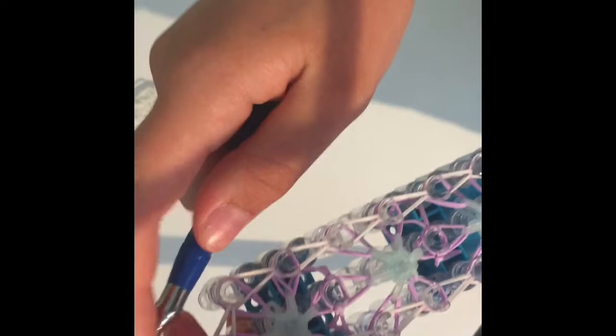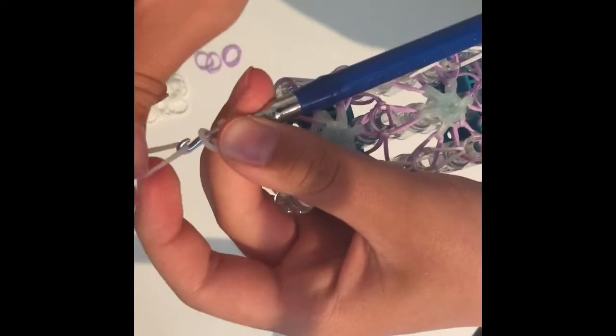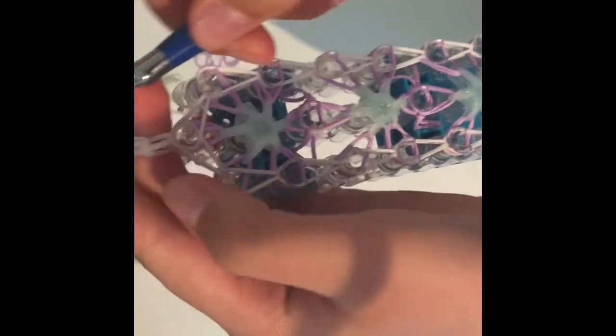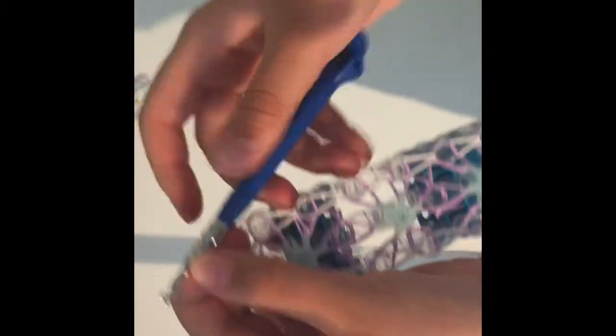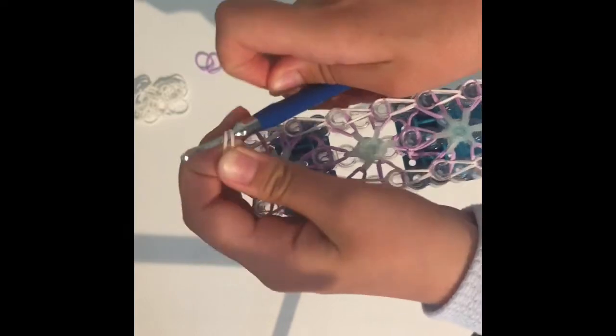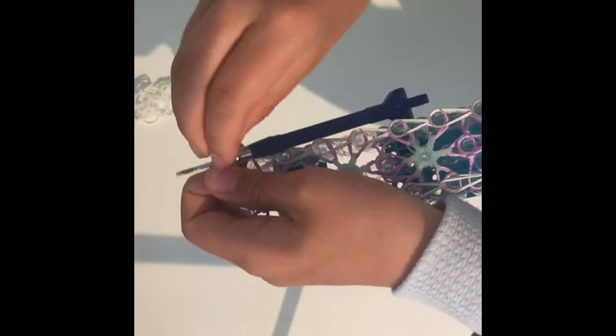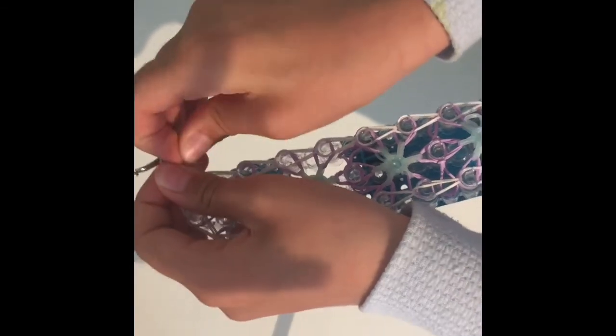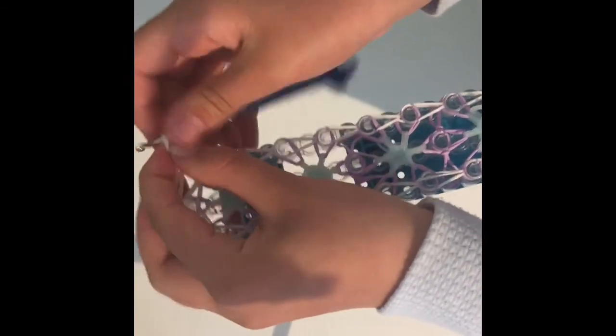I do four, but I have a small wrist, so I would suggest maybe basing it off of other bracelets around the same size. Then you're going to place your S or C clip on the last band here, but don't attach it to the other side when you take it off your loom.